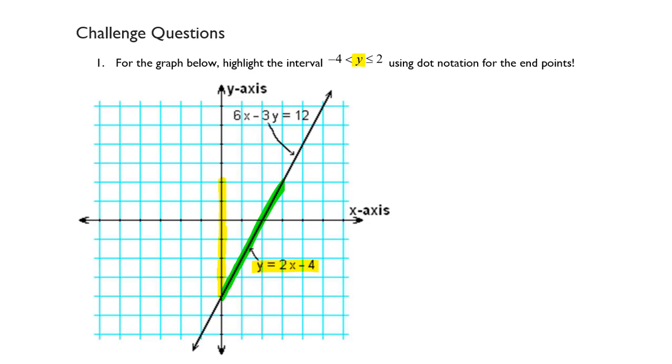But I also want you to figure out what the endpoints would be. Would this point here at 0, negative 4 be an open dot or closed dot? And would this value up here at 3, 2 be an open dot or a closed dot? So you need to figure out what that notation would be on those two endpoints.